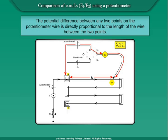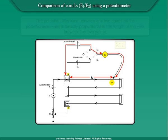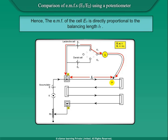The potential difference between any two points on the potentiometer wire is directly proportional to the length of the wire between the two points. Hence, the EMF of the cell E1 is directly proportional to the balancing length L1.